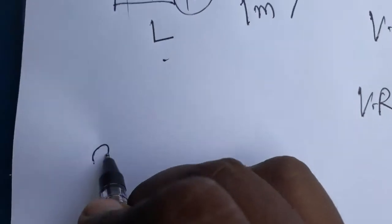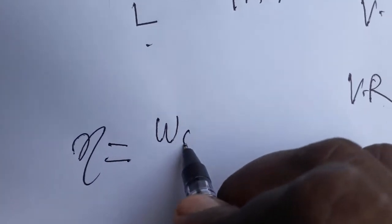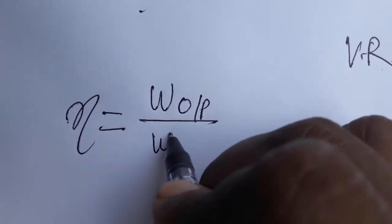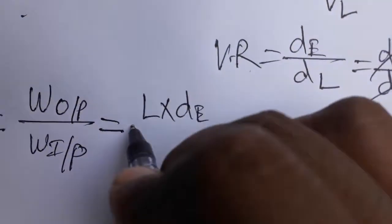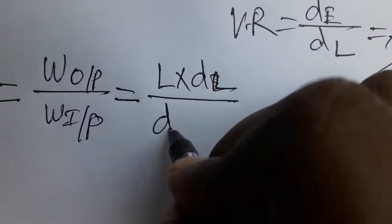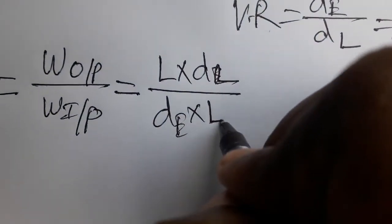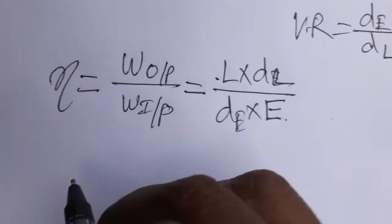Efficiency is work output divided by work input. Here output will be the load times load displacement, input will be the effort times effort displacement.